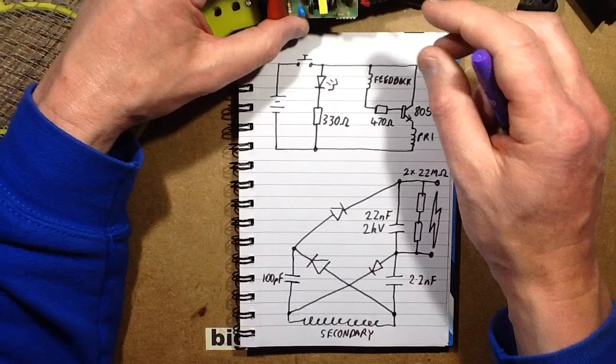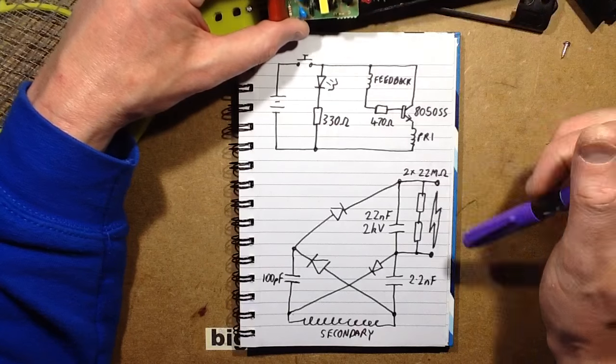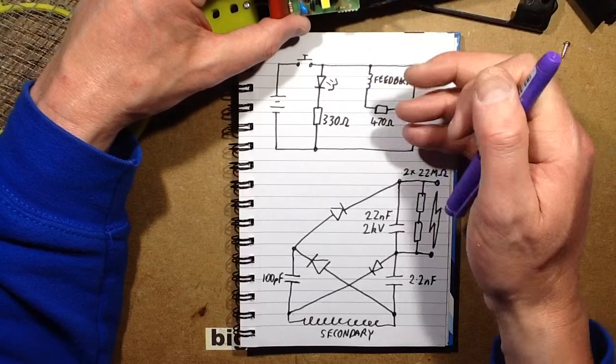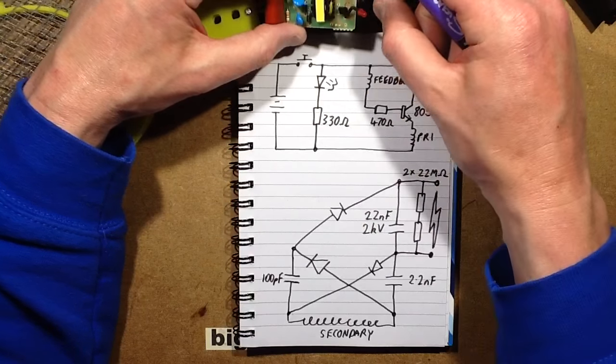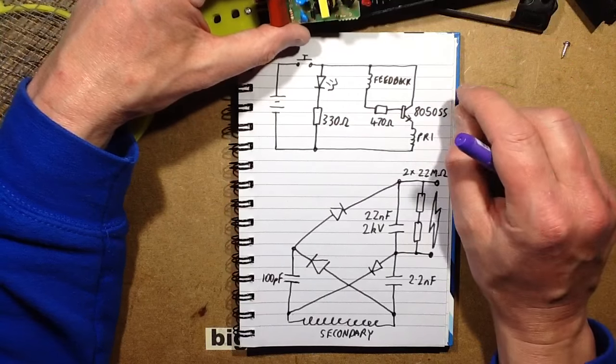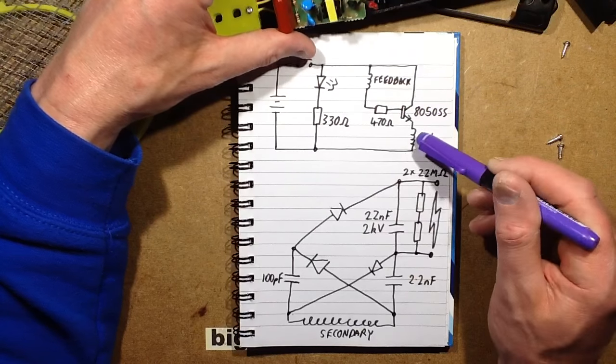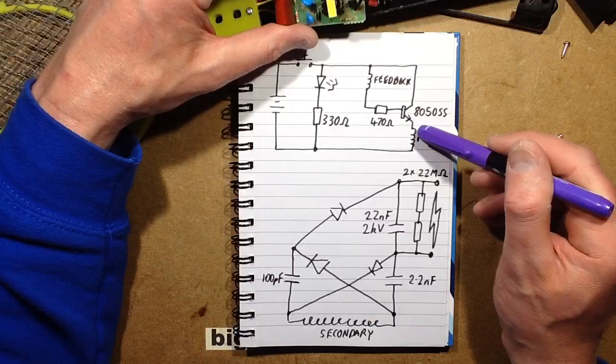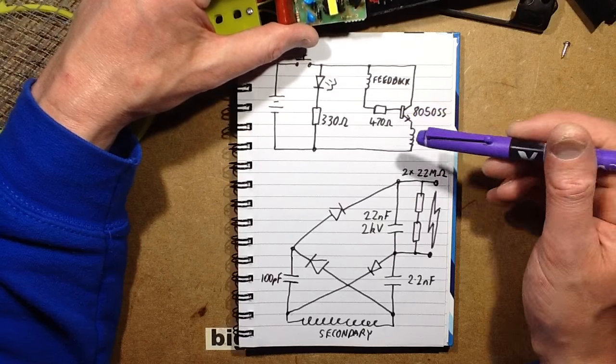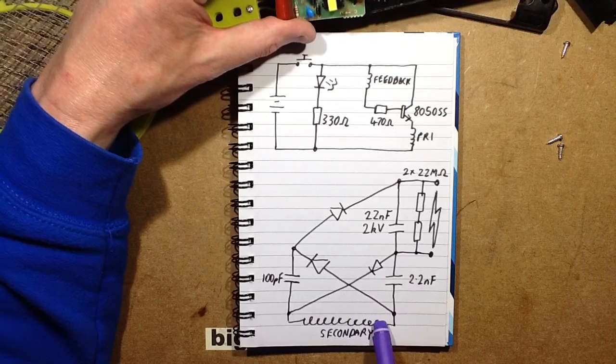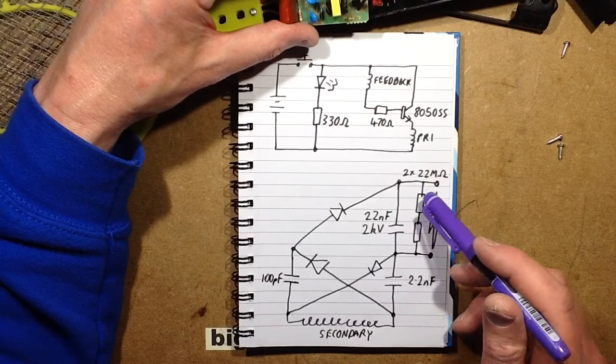The battery supply comes in, goes through this little clicky switch. The first thing it hits is that 330 ohm resistor and the LED, just so the LED lights when you press the button. Then the transformer has three windings: the primary which is turned on and off by the transistor, the feedback winding which turns the transistor on and off, and then the secondary winding which is the high-voltage winding that then gets stepped up to make a high-voltage output.